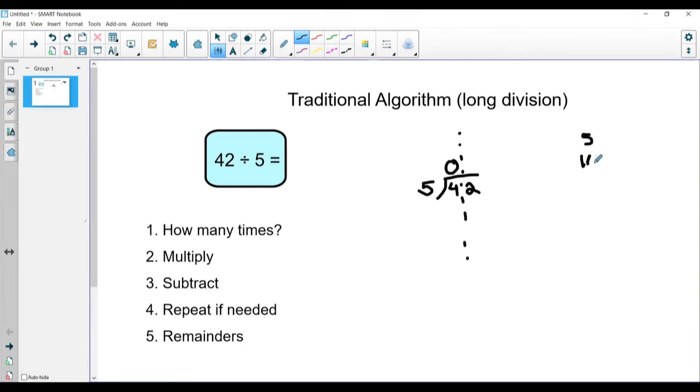5, 10, 15, 20, 25, 30, 35, 40, 45. Now, 45 is too much. It is higher than 42, so we can't use that. Now if I look at what I've skip counted, I'm going to see how many times could 5 go into 42. Well, I have 1, 2, 3, 4, 5, 6, 7, 8 times.